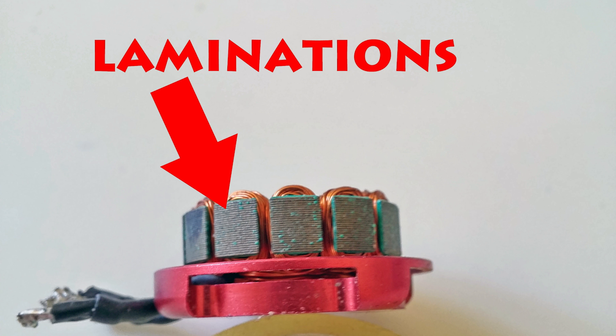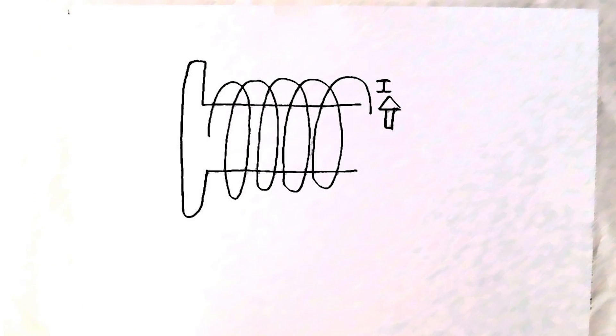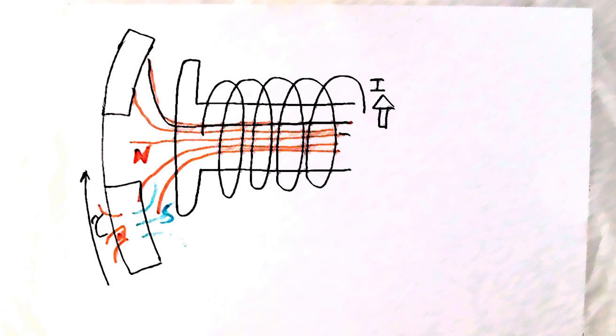First we need to understand why stators are laminated. You already know that we use a current circulating into a coil to produce a magnetic field. This magnetic field then interacts with the magnet to produce a torque that spins the motor.